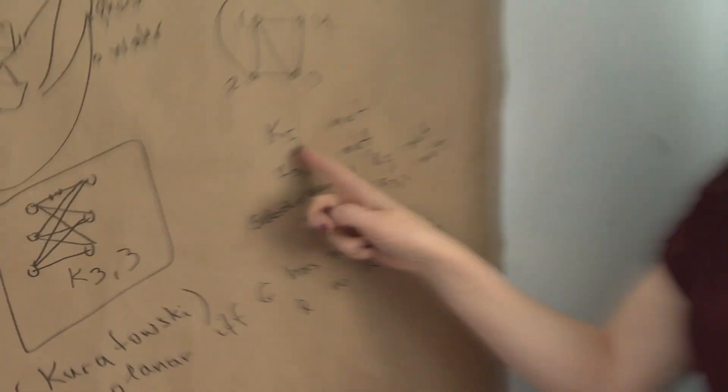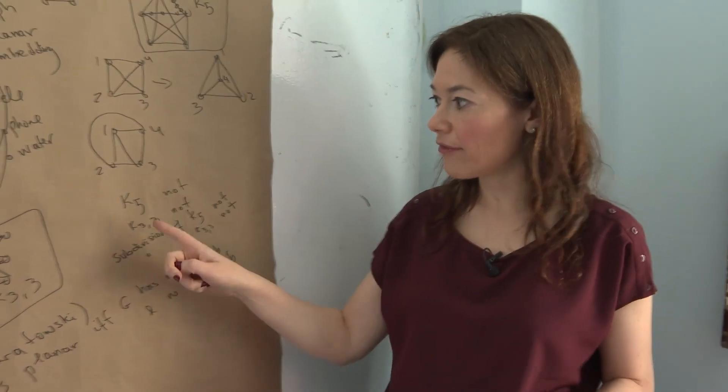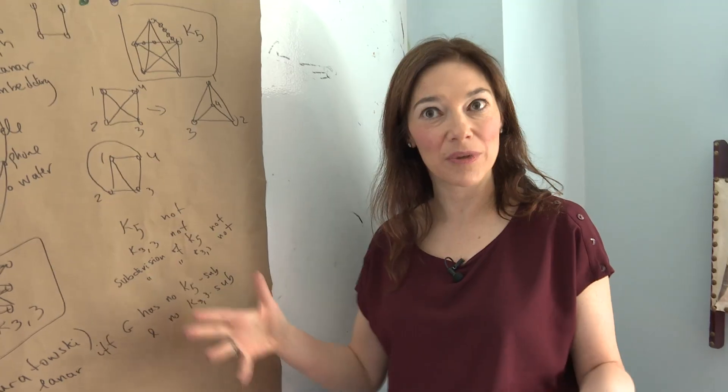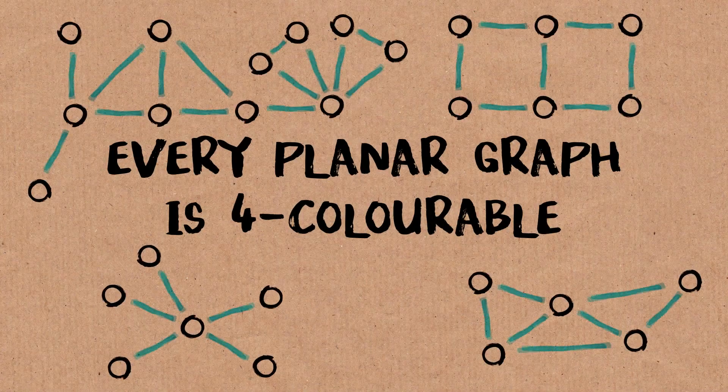Now in planar graphs, we know that we don't have a K5. So you're not going to have five vertices all pairwise adjacent. So at least this naive bound only would give you that you need four. And the theorem is four is enough.